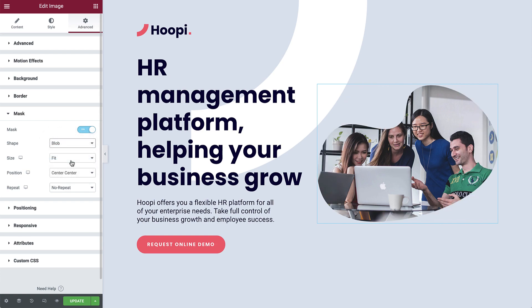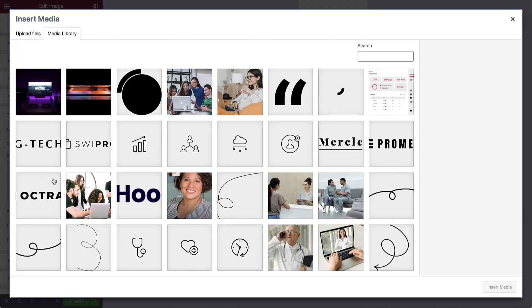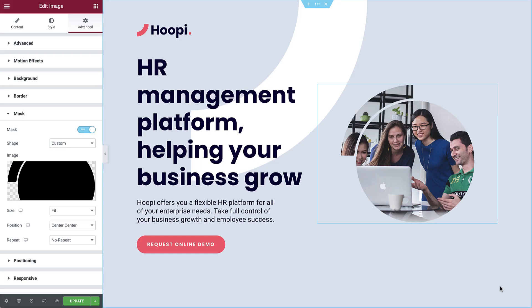And if you want to create an even more customized design, there's also an option to upload your own custom SVG or PNG mask shapes, which is what I'll do for this example. I'll use an SVG file I specifically created for this design, so it fits in nicely next to the title.